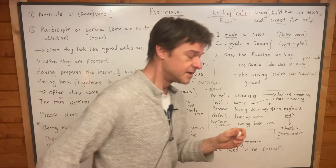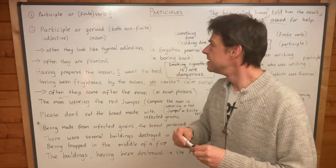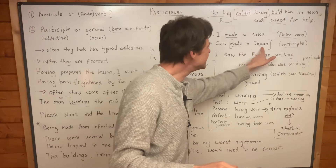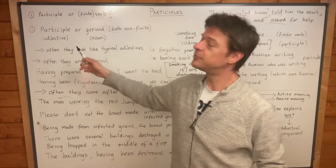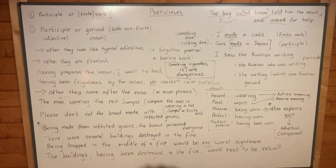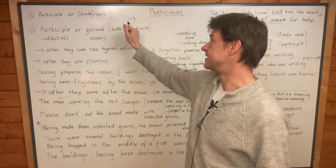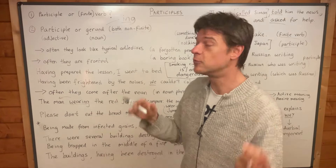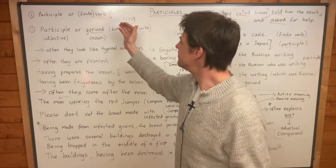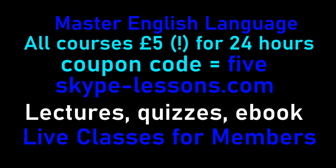And as if that weren't enough, you've got a second complication: participle or gerund. Both of these forms are non-finite verbs. But participle means a verb functioning as an adjective — 'called Simon' describes the boy, 'made in Japan' describes the cars. A gerund looks exactly the same as a participle because they both end in -ing: running, playing, walking, smoking, drinking. The gerund forms look exactly the same. The difference is that a gerund is the verb functioning as a noun, while a participle is the verb functioning as an adjective.